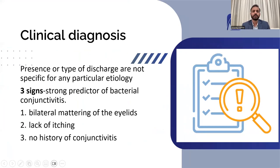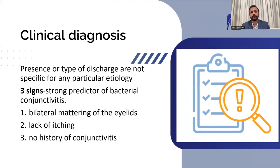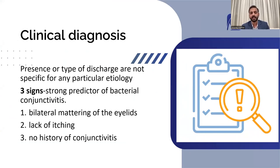How do you diagnose bacterial conjunctivitis? Many studies fail to show that by looking at the presence, absence, or type of discharge you can identify a particular etiology, because that can be misleading. However, there is a triad of three signs — if these three signs are present, your case has a very strong probability of being bacterial in origin.